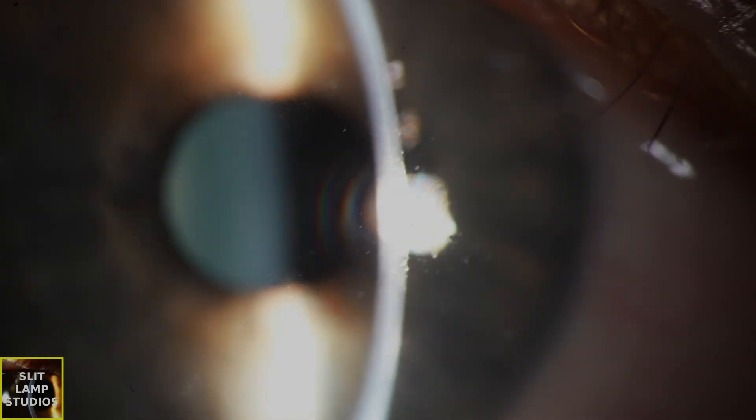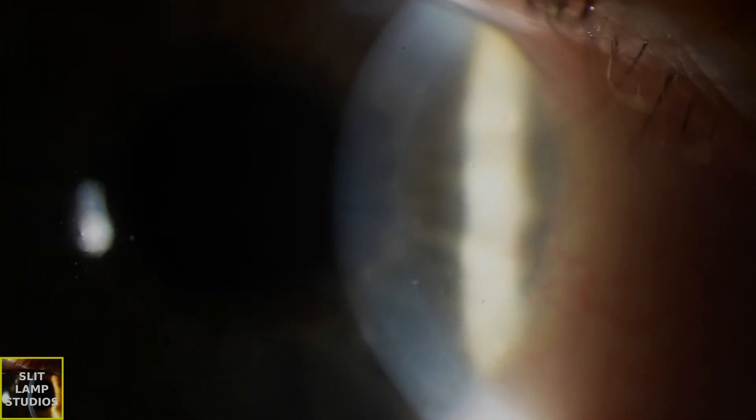Now here we can see those subepithelial infiltrates, and these subepithelial infiltrates form due to an immune response due to viral antigens in the corneal epithelium and the anterior stroma. And they appear as these multiple small white opacities in the central cornea, and they can actually lead to some reduced vision and glare.